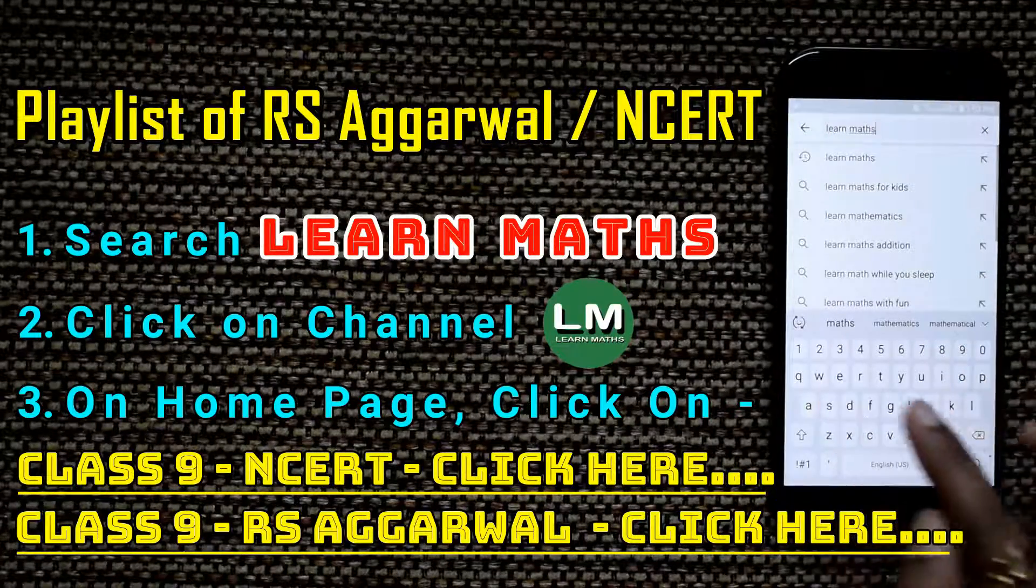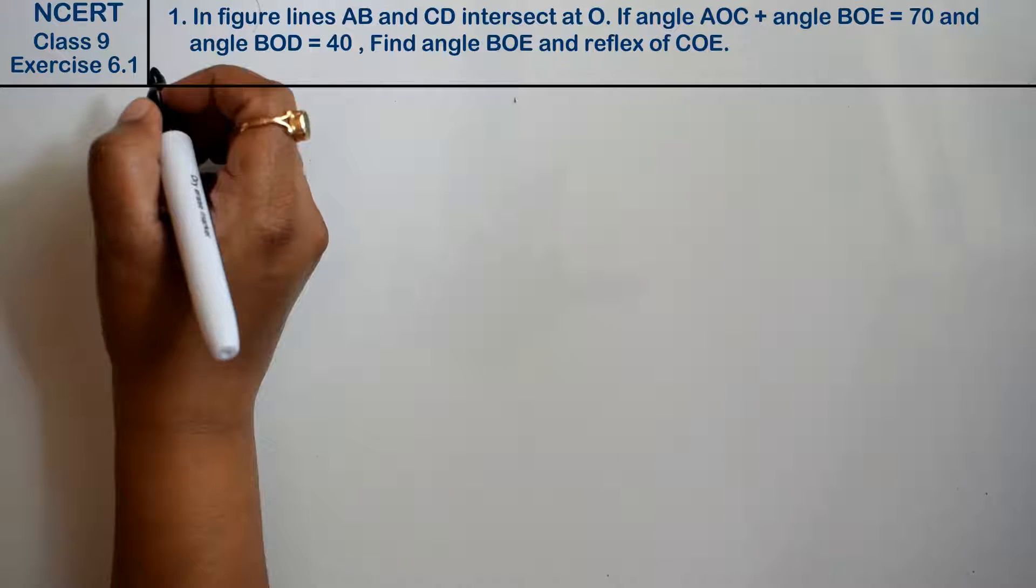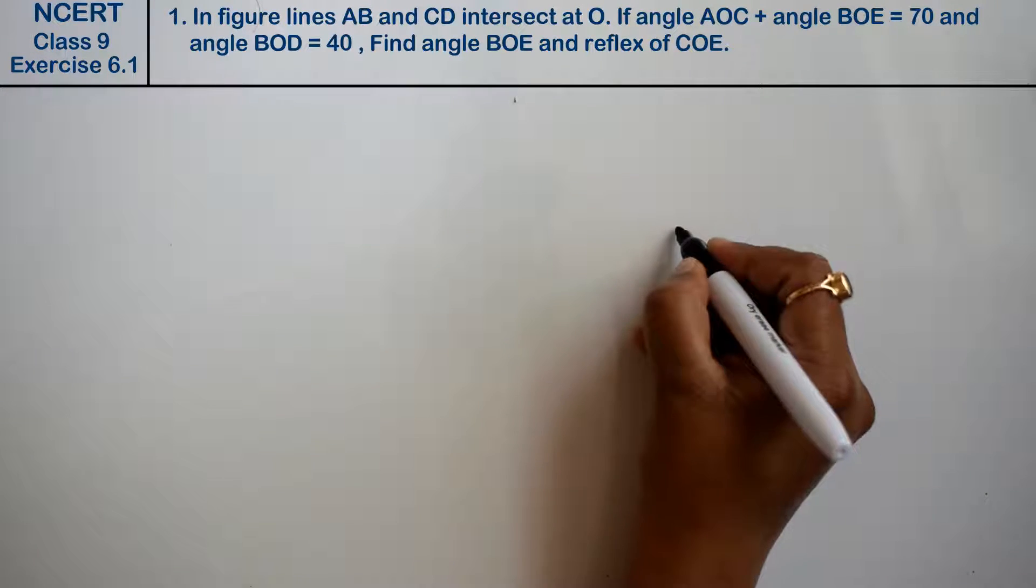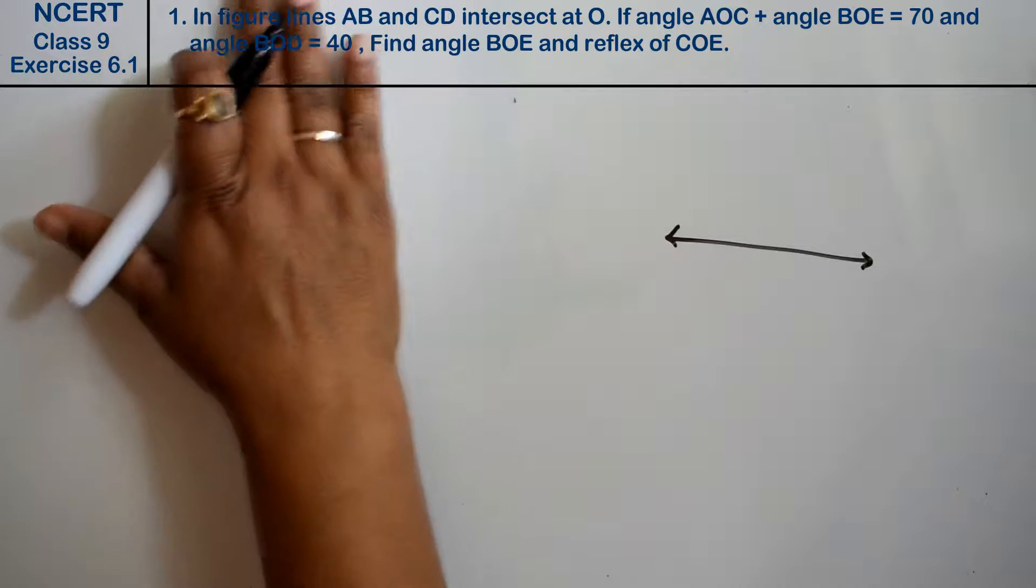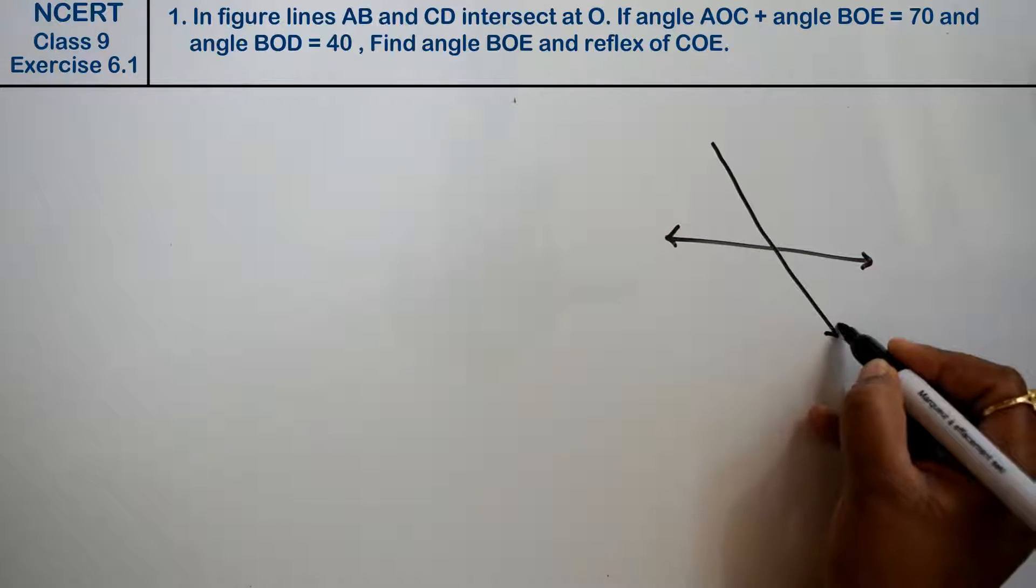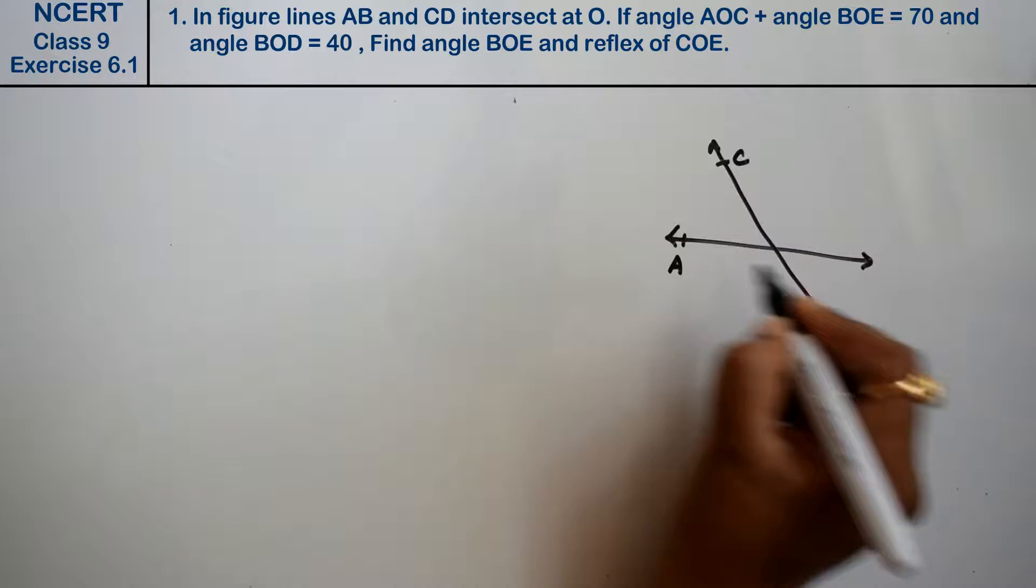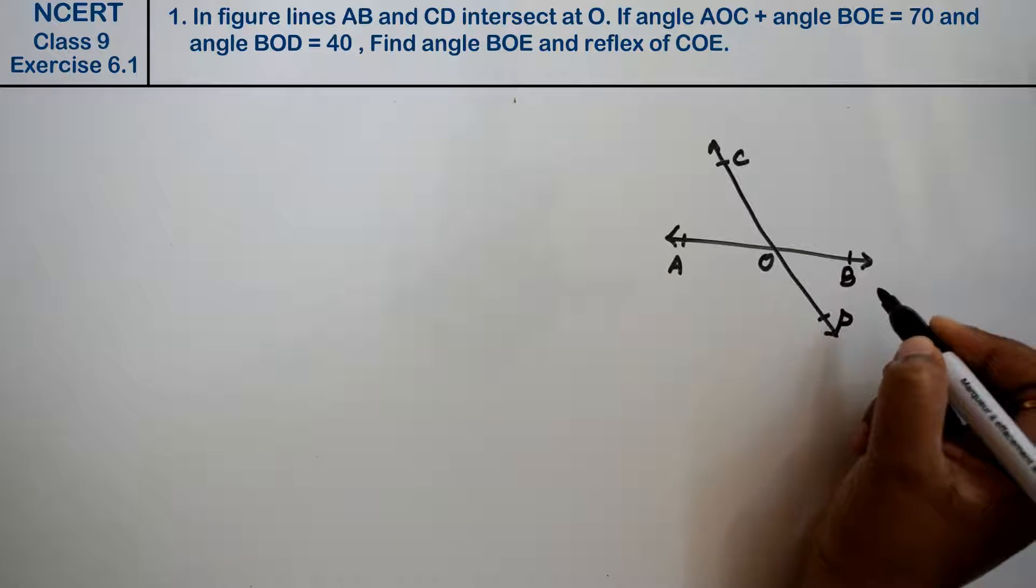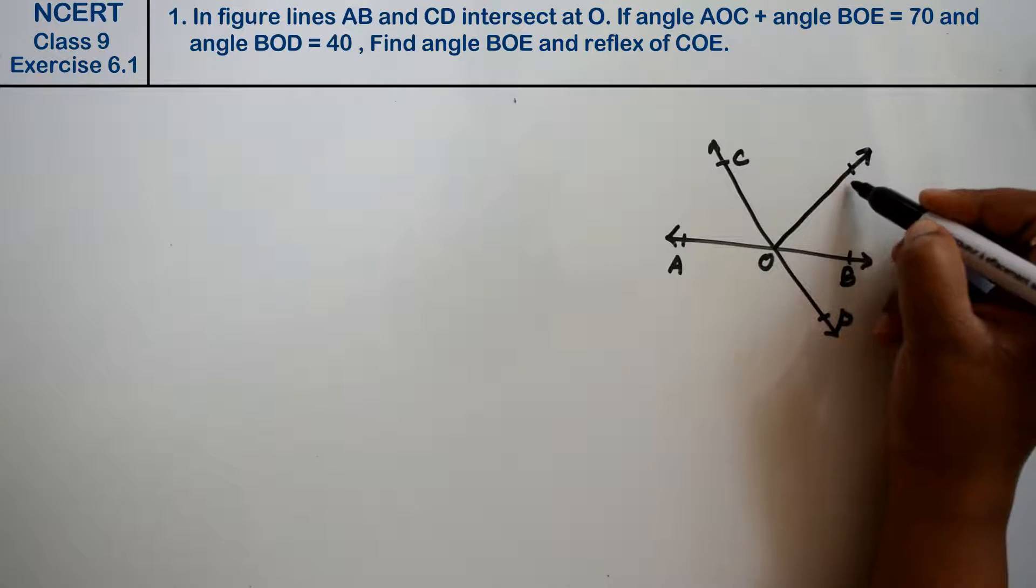Let's do question number first of exercise 6.1, that is lines and angles. Question number one is in figure 6.13. Let's make this figure first. This is C, this is A, O, B, and this is E.